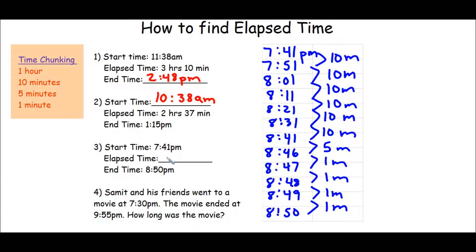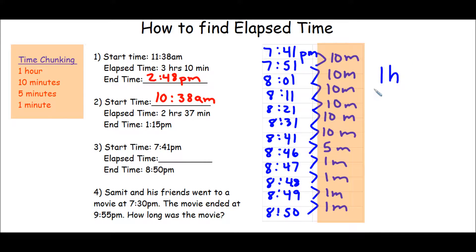To find out how much time has passed, all we do is add all the time we added to our start time. So 10, 20, 30, 40, 50, 60 minutes — that's 1 hour. Then 5, 6, 7, 8, 9 minutes. So 1 hour and 9 minutes is how much time has passed by.